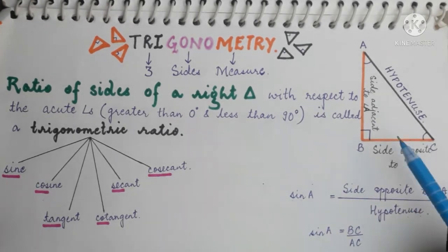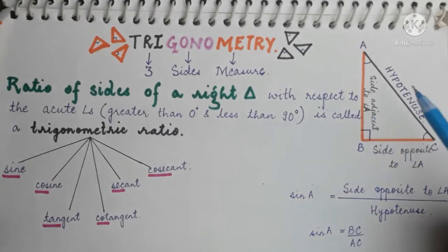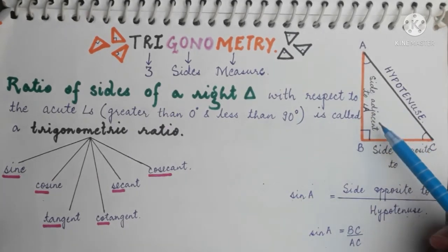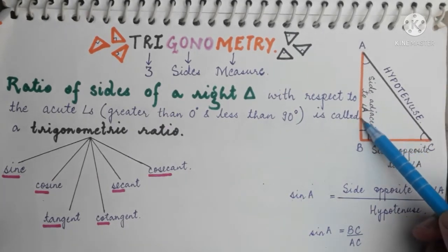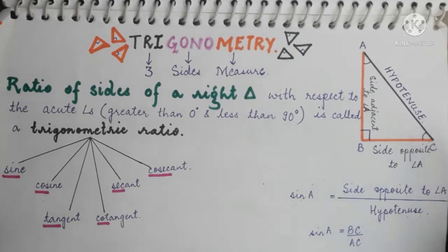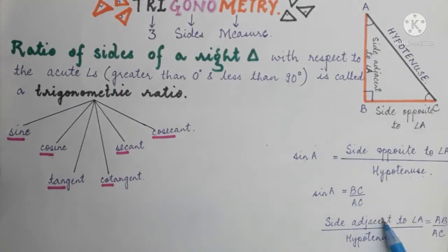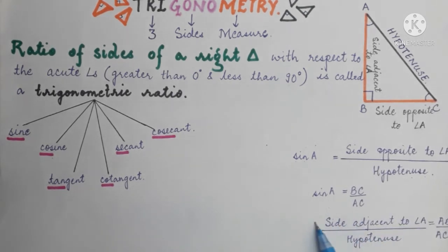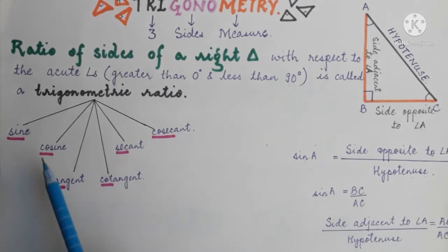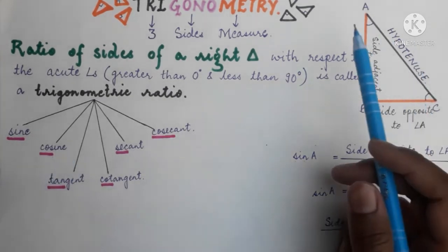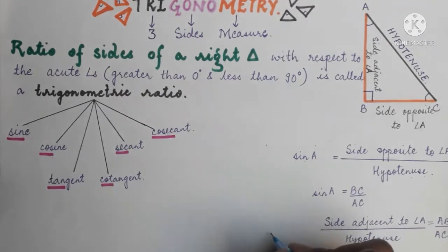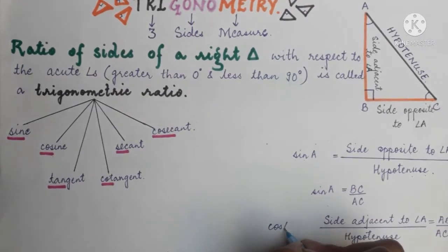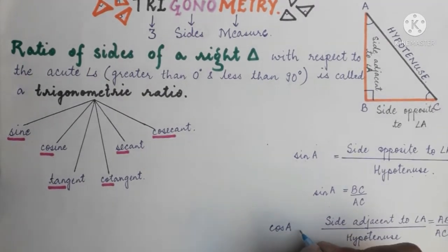Similarly, let us consider another ratio: side adjacent to angle A upon hypotenuse. Side adjacent to angle A upon hypotenuse is equal to AB upon AC. This ratio is called cosine of angle A. We write it in short form as cos of angle A. So cos A equals AB upon AC.